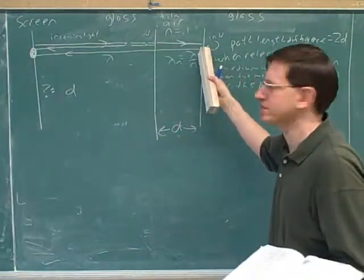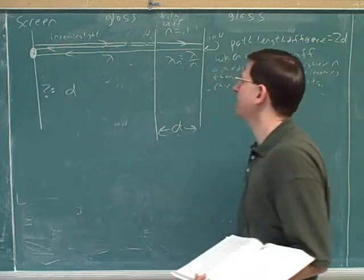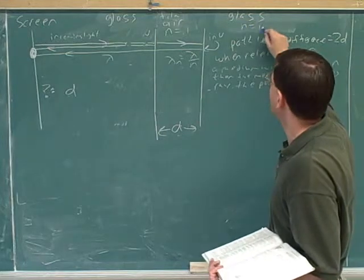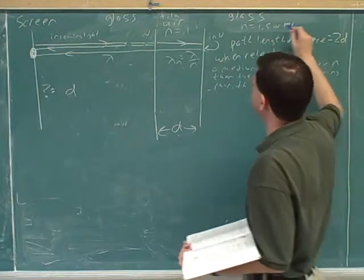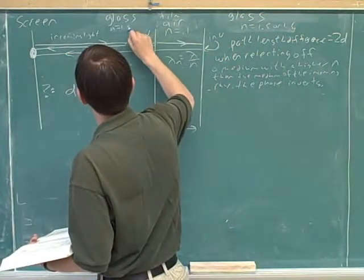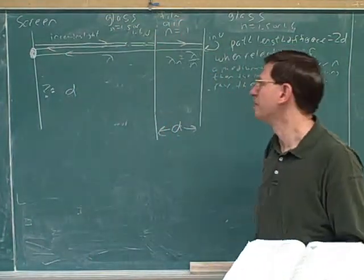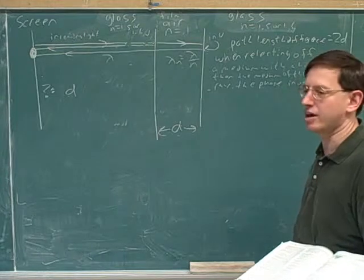Will there be inversion at the second surface? Yes. Yeah, because now we're moving to the higher n. We know that glass, the table had a bunch of different n's for glass, but they were all about 1.5 or 1.6. Whatever they are, they're definitely bigger than air. Remember that 1 is the minimum. So you're right, now there's going to be that 1 inversion.